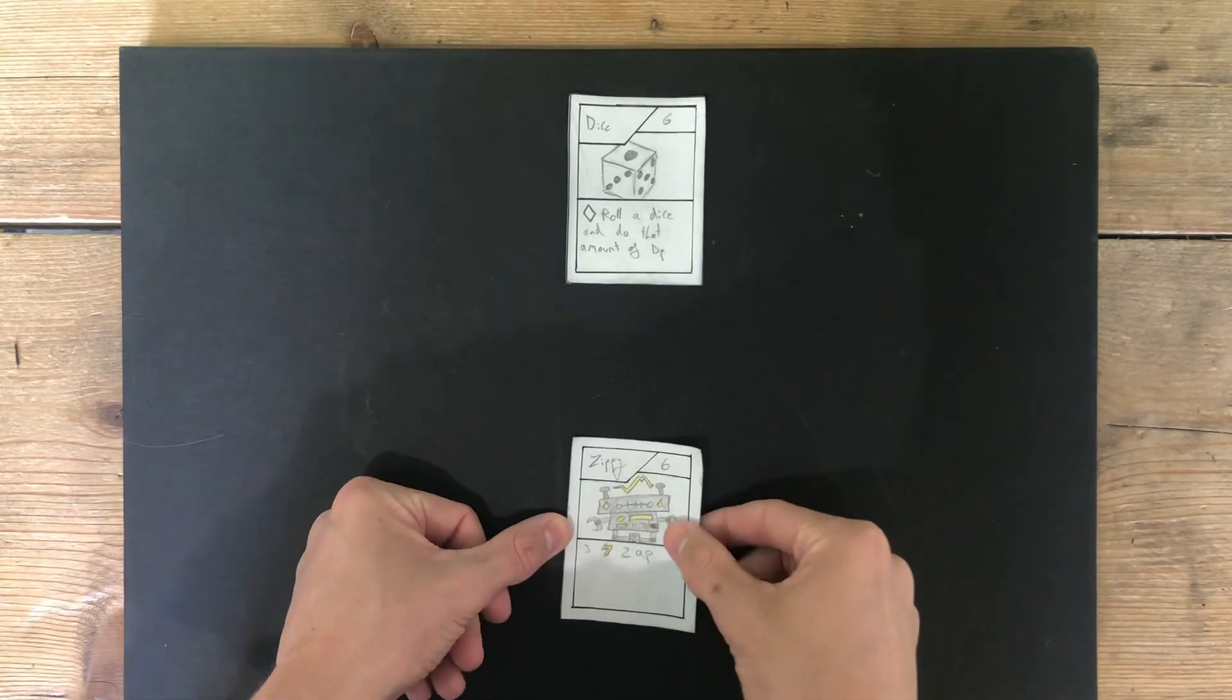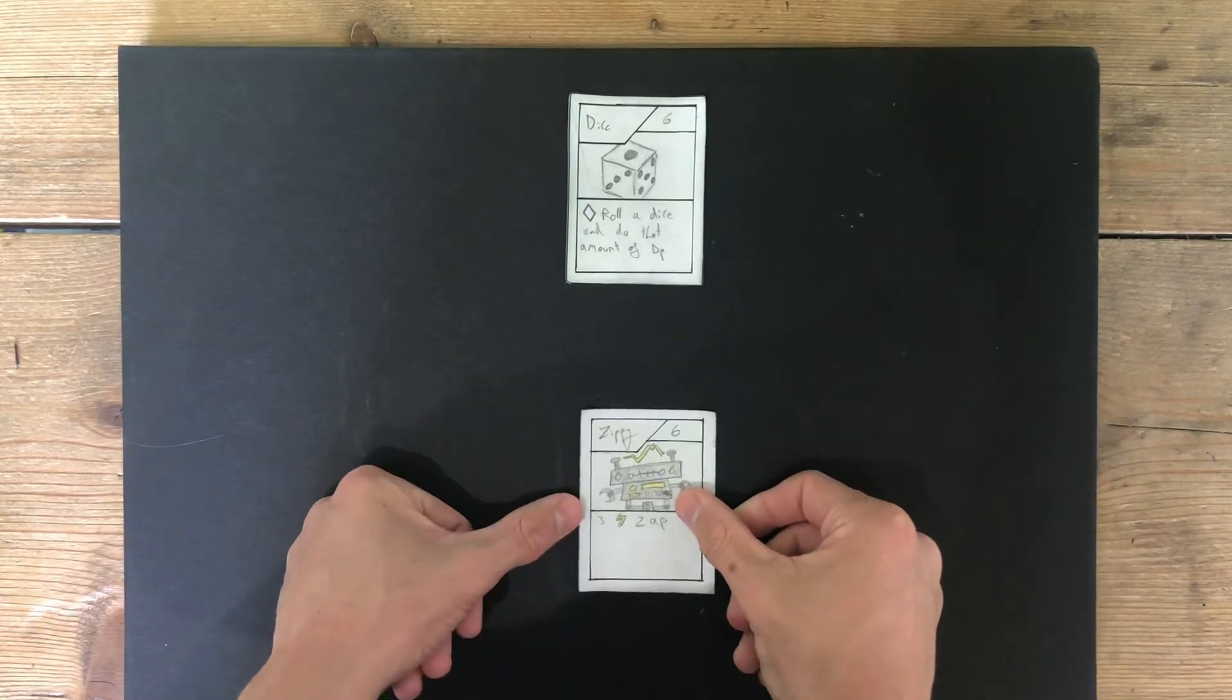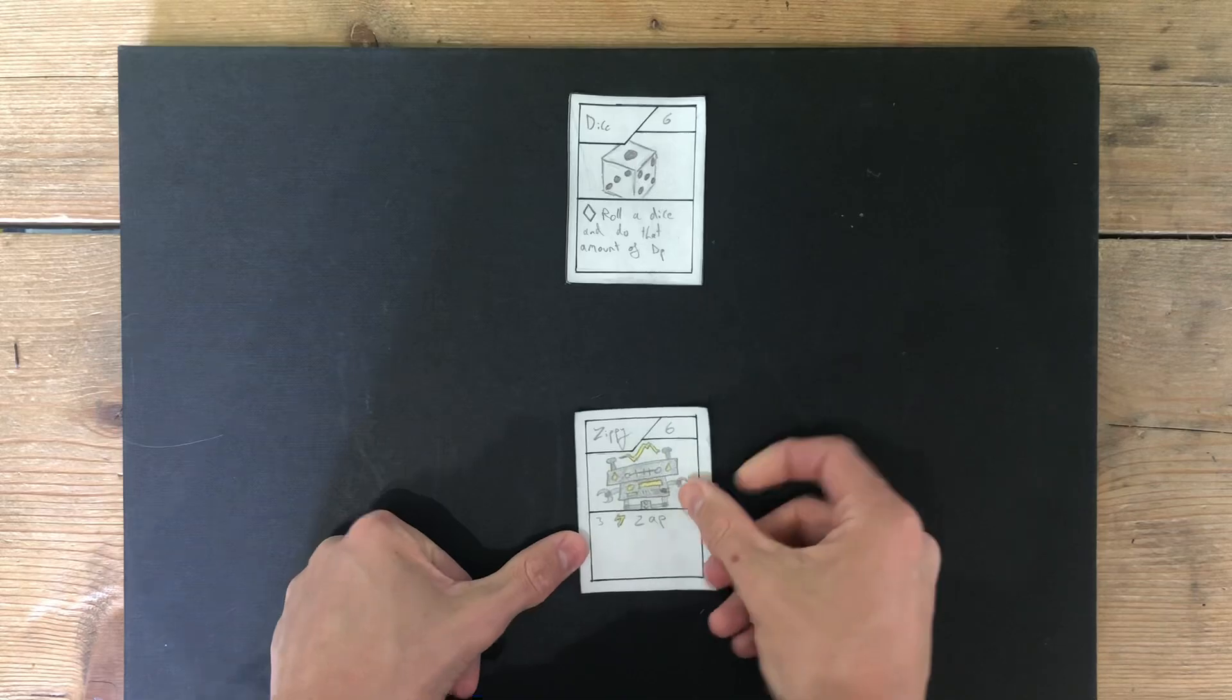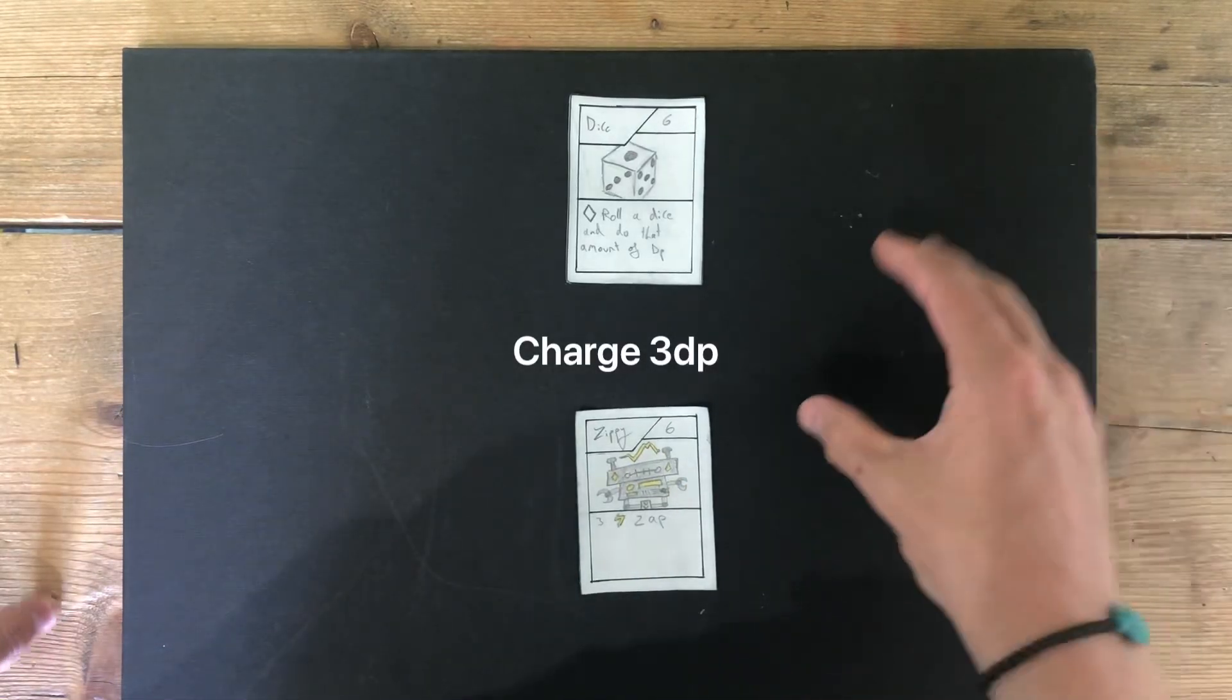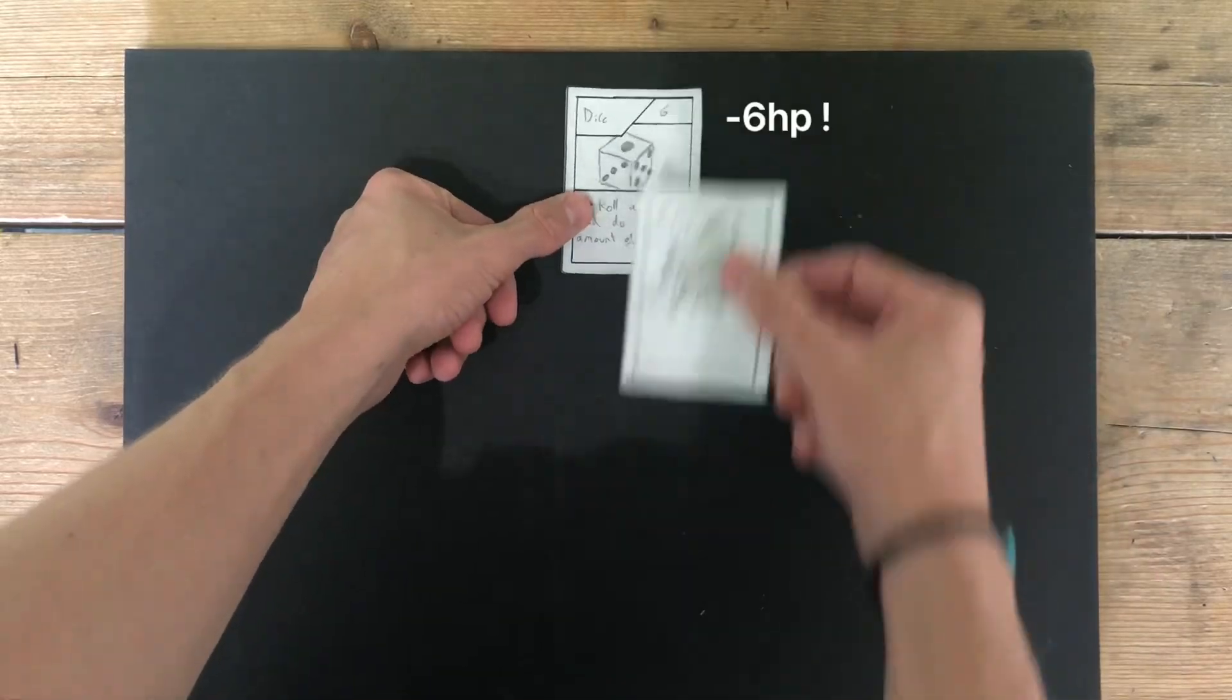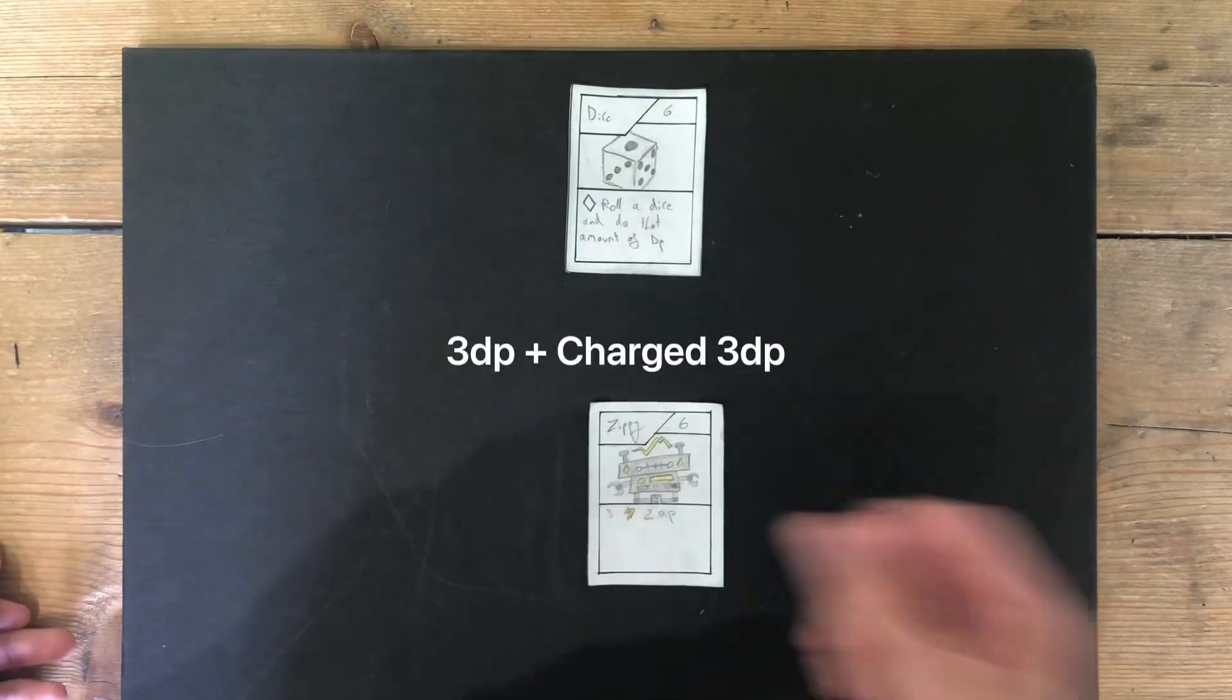To charge an attack, you use up one attack and go, where you would have attacked, but instead you're moving that damage to your next go. If Zippy was to charge an attack, it would charge the attack, use up your attack and go, and the next turn, that 3 damage would be added. So, the next time Zippy attacks, it'll do 6 damage, because it's the base damage plus the charged damage.